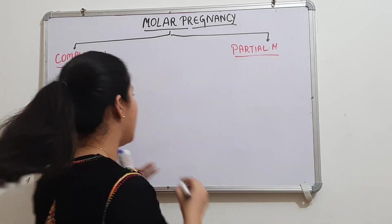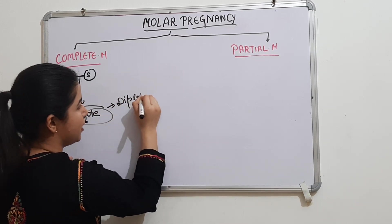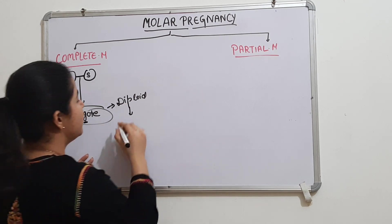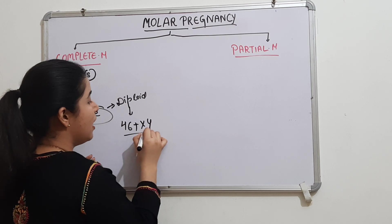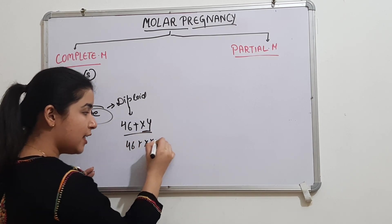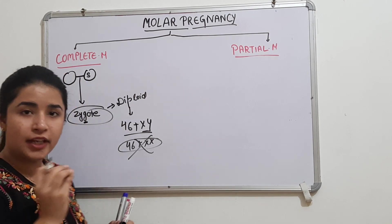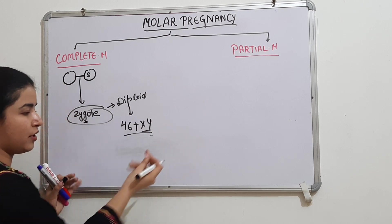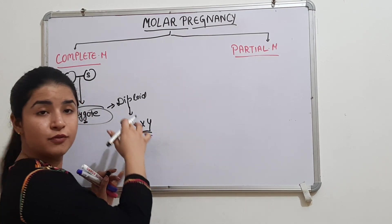Because the egg has no nucleus, the zygote is formed by multiplication of the sperm's own genetic material. This gives a diploid condition with a chromosomal formula of 46XY. A 46XX result is not possible here because the egg contributes no genetic material.